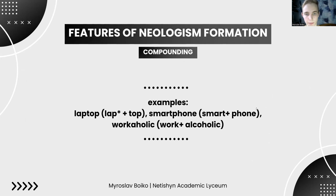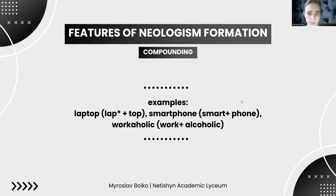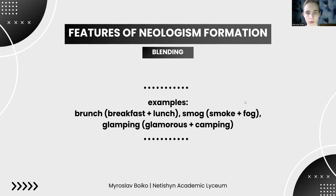Compounding is the combination of two or more words into a single unit — like lap plus top giving laptop, smart plus phone giving smartphone, and work plus alcoholic giving workaholic. Blending is the merging of parts of two words to form a new one — for example, brunch from breakfast plus lunch, smog from smoke plus fog, and glamping from glamorous plus camping.